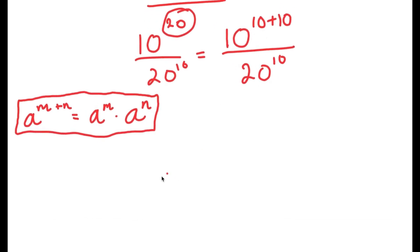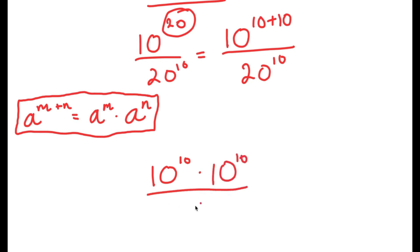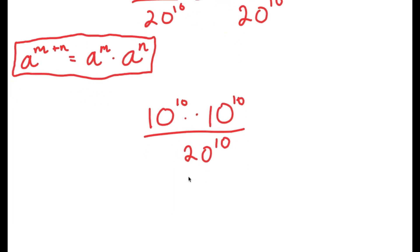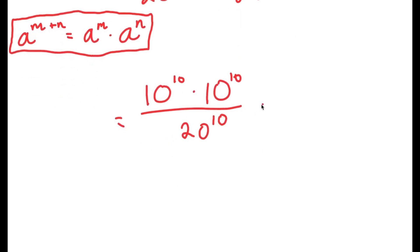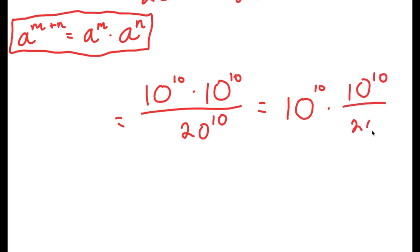So now 10 to the power of 10 plus 10 is going to turn into — we can think of both 10 as both m and n — so this turns into 10 to the power of 10 times 10 to the power of 10, all over 20 to the power of 10. This can be written as 10 to the power of 10 times 10 to the power of 10 over 20 to the power of 10.